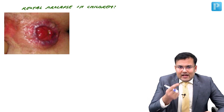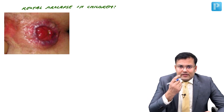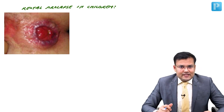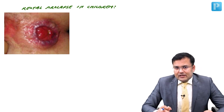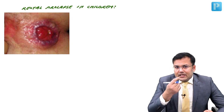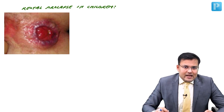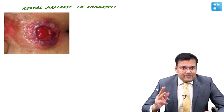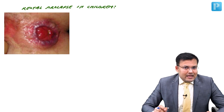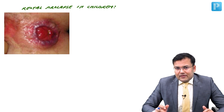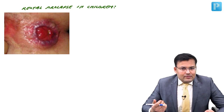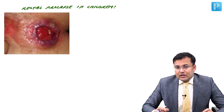These kids are suffering from protein energy malnutrition. They have the habit of eating soil, known as pica. Because of this, there is worm infestation. When these patients have worm infestation and because of eating soil, they have diarrhea. Three factors: protein energy malnutrition, worm infestation, and diarrhea. When the child is going for defecation and straining, there is prolapse of only mucosa.